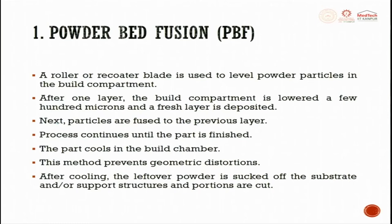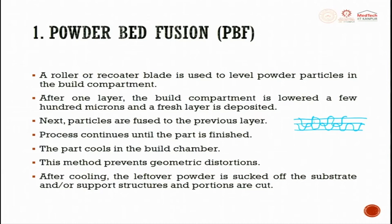After one layer, the build compartment is lowered a few hundred microns and a fresh layer is deposited. As the melting happens, the build platform sinks down by one layer and the powder platform is pushed up. The particles are fused to the previous layer — when the laser hits, there is a Gaussian distribution of heat, and the heat stitches into the bottom layer to avoid defects. The process continues until the part is finished. The part is cooled in the build chamber to prevent geometric distortion, and afterwards the leftover powder is sucked off, support structures are cut, and you get the final part.